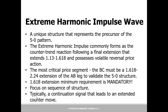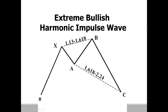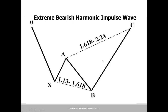Some of you know the 5-0 pattern — this actually is the precursor of that structure. The extreme harmonic impulse wave forms between that 1.13 and 1.618 zone. The whole fact that the structure is unable to continue in the predominant trend means we get an initial reaction. We have some type of extended rally forming an initial high, then the XAB move is pretty tight — either at a 1.13 or 1.618 — and it's a failed breakout. When we take out the A point, it's usually the beginning of a larger downtrend.